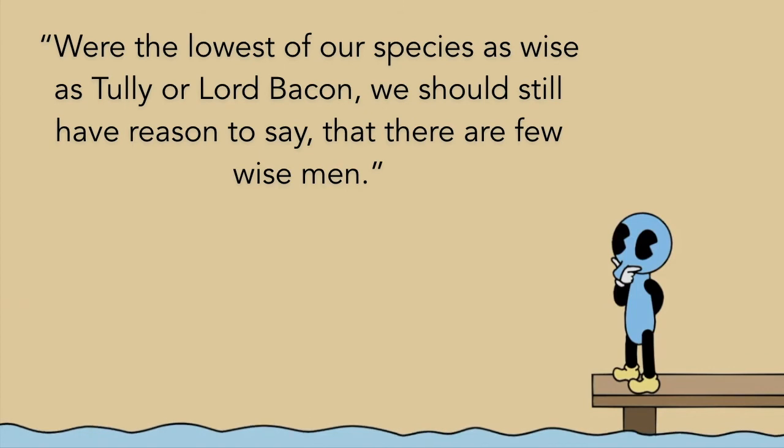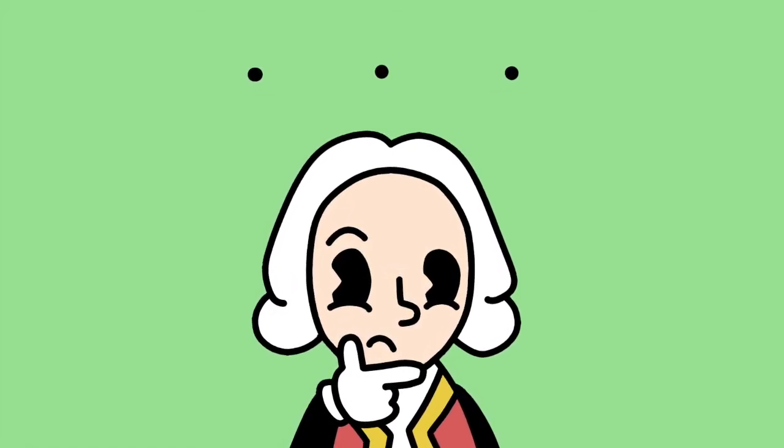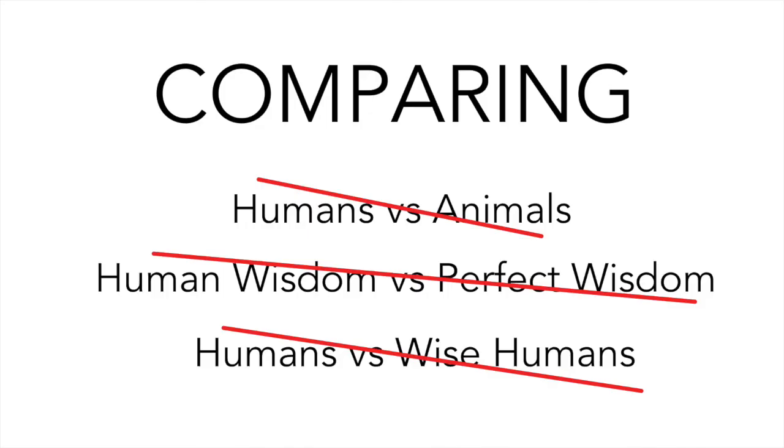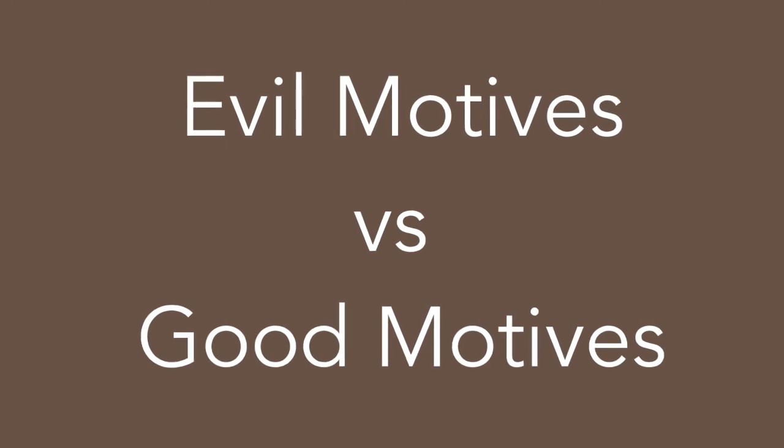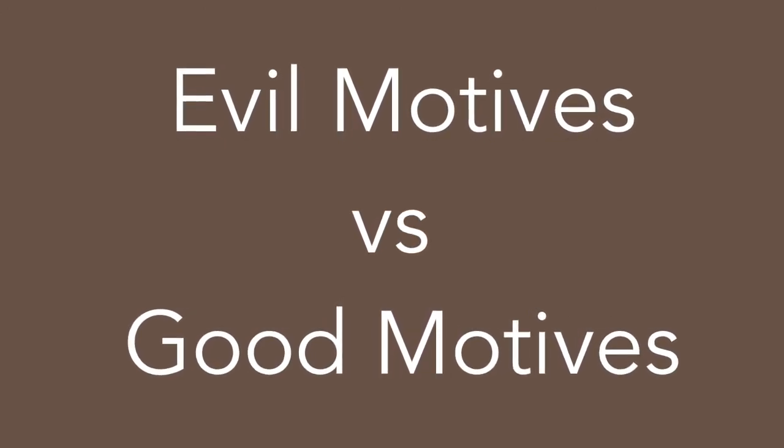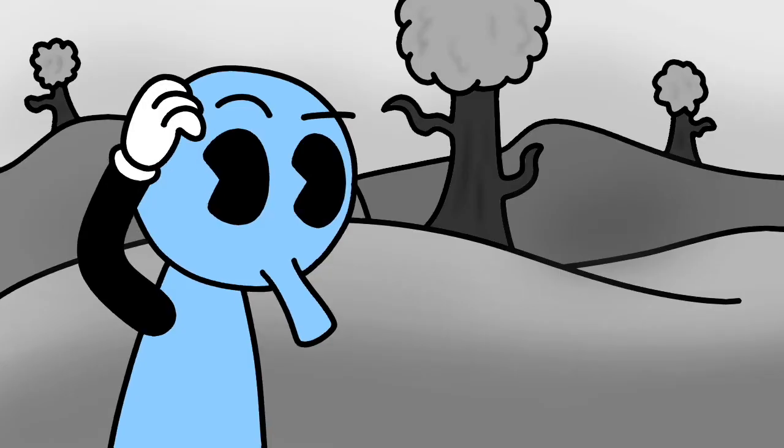Were the lowest of our species as wise as Tully or Lord Bacon, we should still have reason to say that there are few wise men. At this point, Hume wants to talk about the only comparison which he really thinks is worth his time. It's not comparing humans to animals or human understanding to perfect wisdom or humans to wise humans. It's about comparing the different motives and principles inside of us as humans. So we're comparing evil motives within us with good motives. Is there an imbalance here?